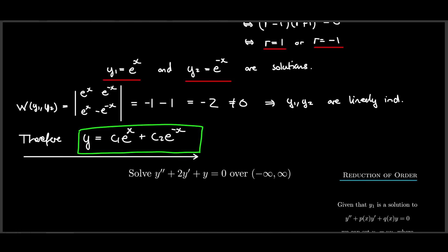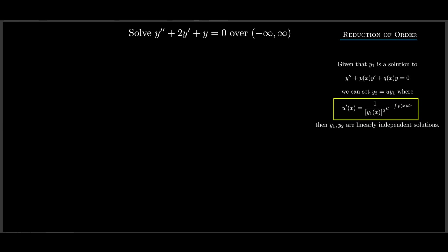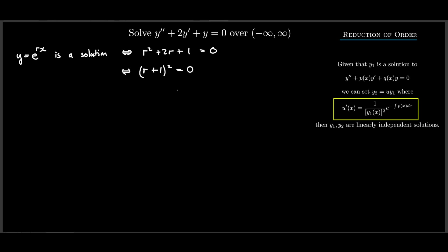Let's try another example. Using our substitution y = e^(rx), we know this is a solution if and only if r satisfies the quadratic equation r² + 2r + 1 = 0. We can see this factors as (r + 1)² = 0, so r = −1 is our only root.